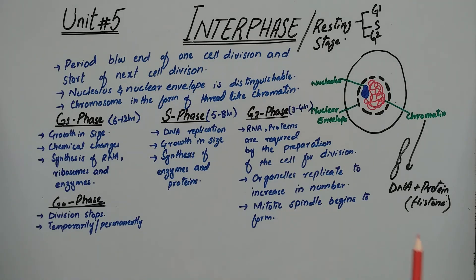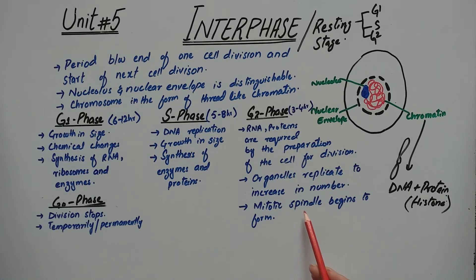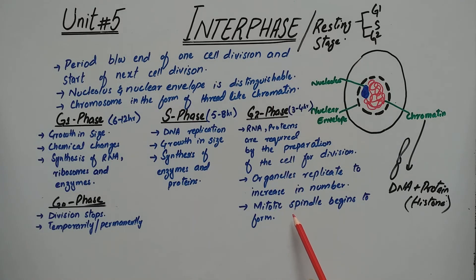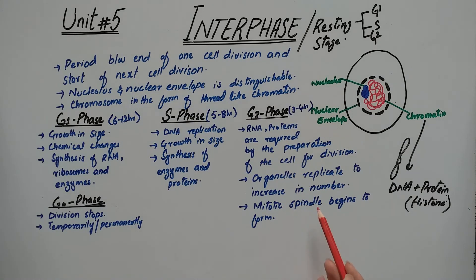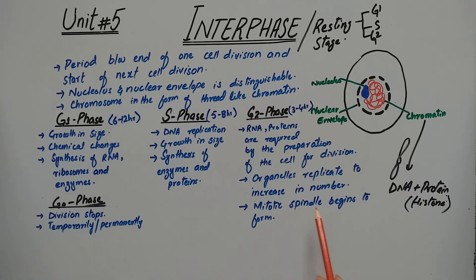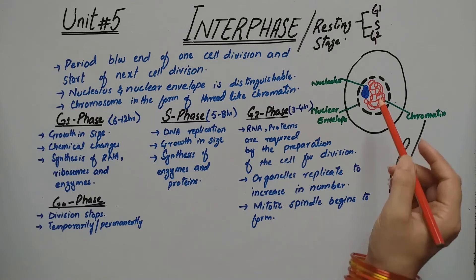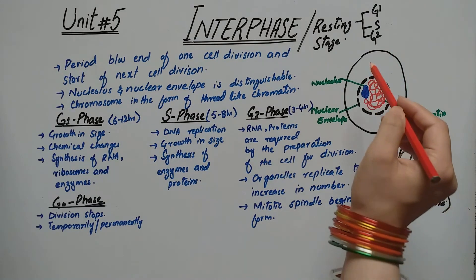In G2 phase, the mitotic spindle begins to form — a network of microtubules called spindle fibers. These form because after G2 phase the division phase will start and the spindle fibers will help separate the chromosomes to opposite poles.